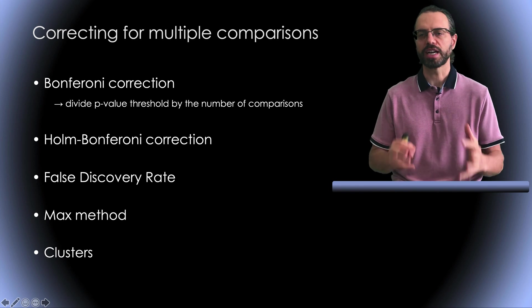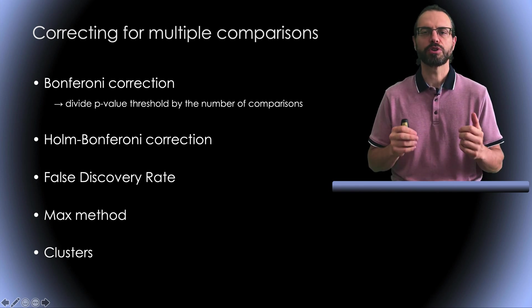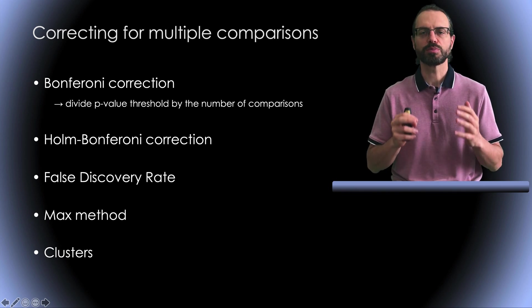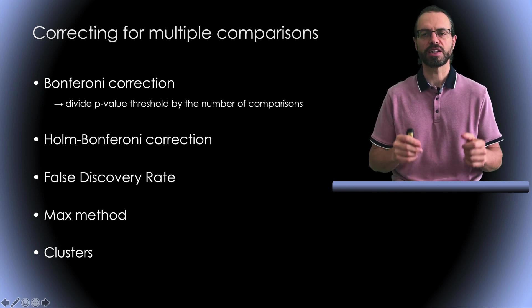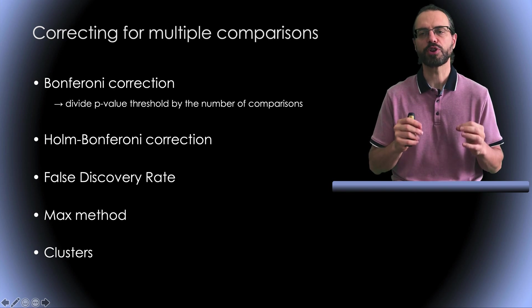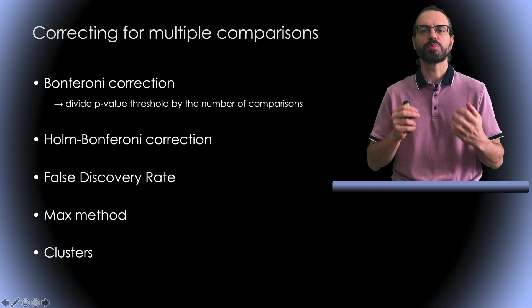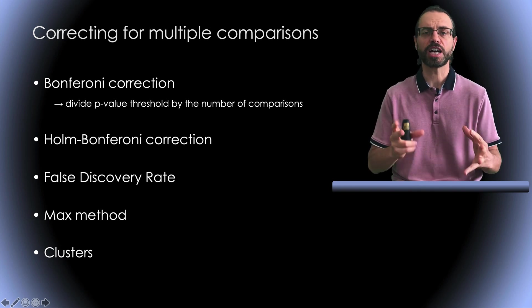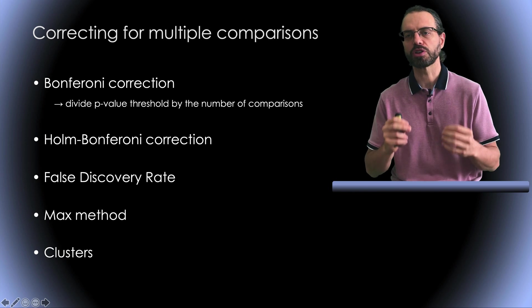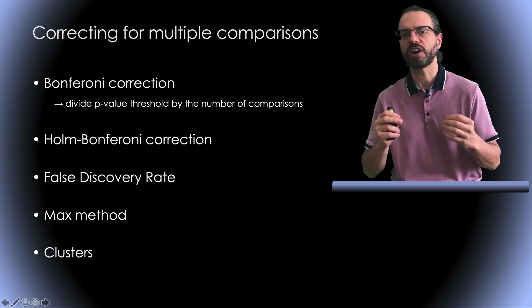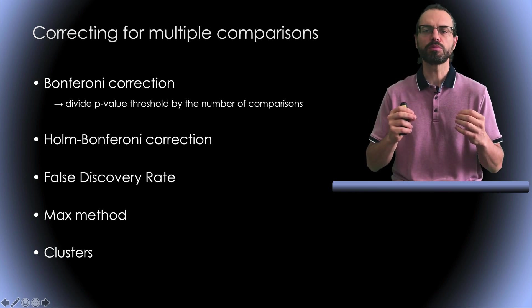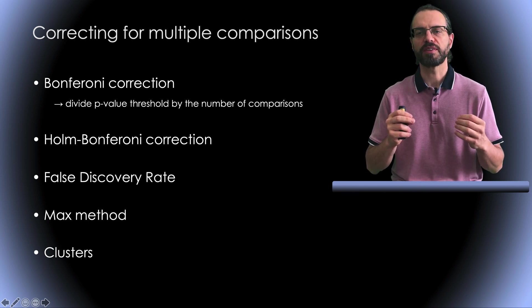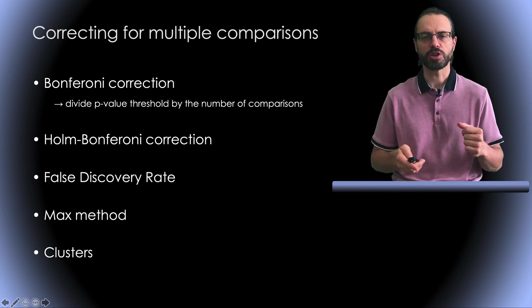To solve that problem, we need to correct for multiple comparisons. I'm going to show you several methods commonly used in EEG research. First we have the well-known Bonferroni correction, which consists of dividing the p-value threshold by the number of comparisons. So if you're performing 100 comparisons and you have a p-value threshold 0.05, you end up with a corrected p-value threshold of 0.0005. Then you have the Holm Bonferroni correction, false discovery rate, the max method, and the cluster method. And I'm going to detail how each of these work.